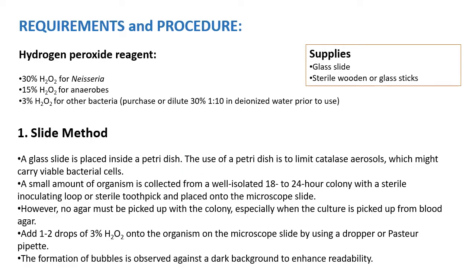The requirements for the catalase test include a clean glass slide and a sterile wooden or glass stick to pick up the test culture. For the hydrogen peroxide reagent: 30% is used for Neisseria, 15% for anaerobes, and in most college labs, 3% hydrogen peroxide is used for other bacteria. There are two methods: slide method and test tube method — both give similar results.